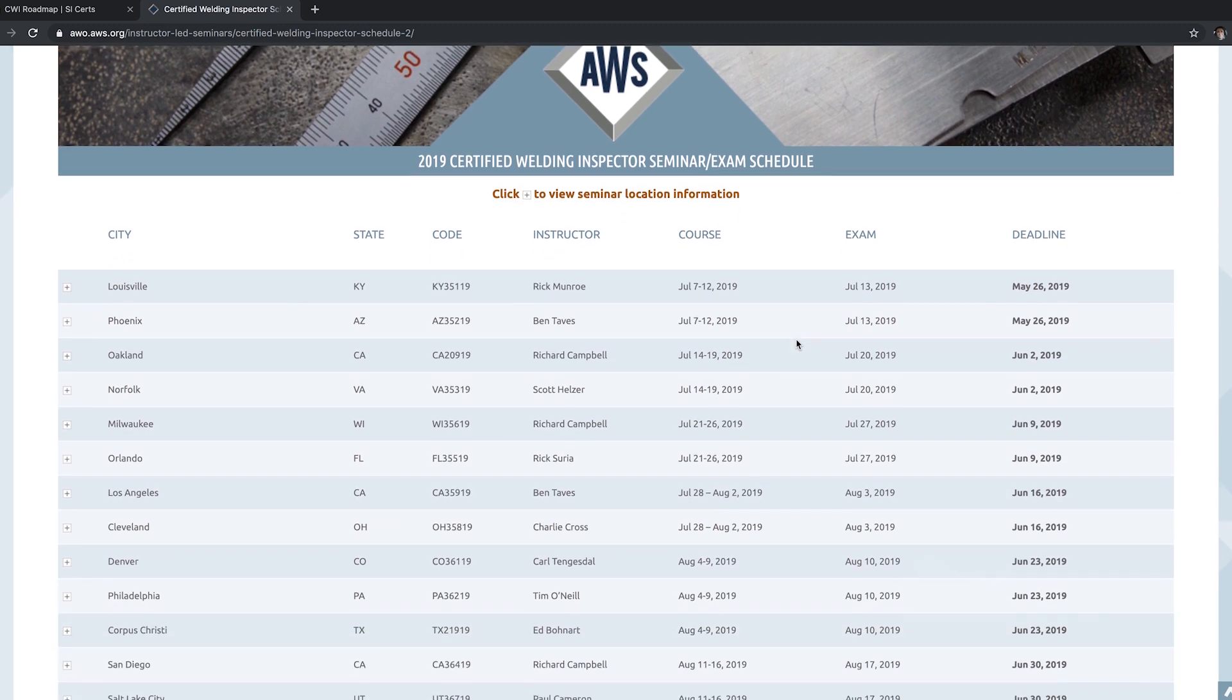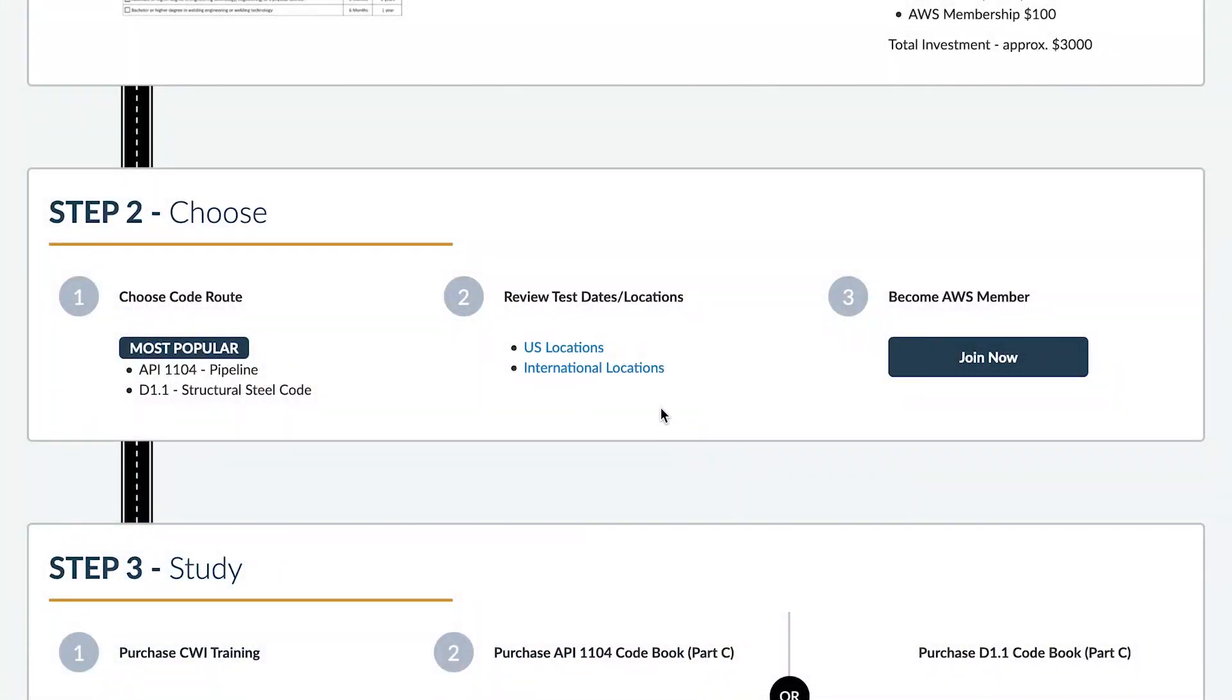But remember, the seminar is not a requirement to take the test. You will take the Part B test first. So you'll need to choose a testing date and location for Part B. This schedule is found on AWS's website.